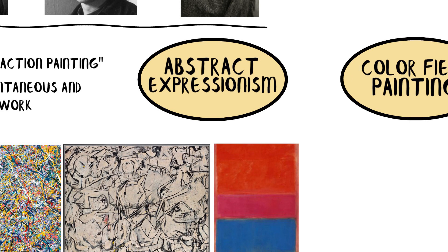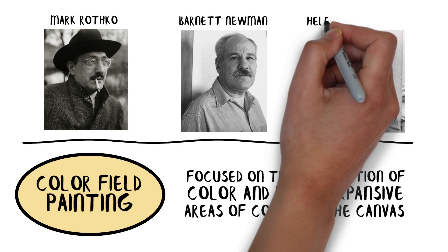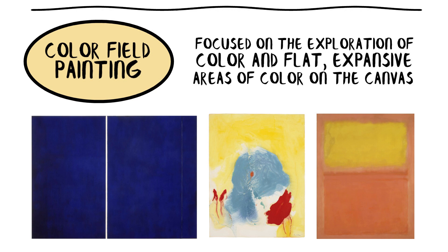Color Field Painting, on the other hand, focused on the exploration of color and flat, expansive areas of color on the canvas. Artists such as Mark Rothko, Barnett Newman, and Helen Frankenthaler were key figures in this movement. Their works featured large, unbroken fields of color, often devoid of recognizable subject matter, aiming to evoke emotional and spiritual responses through the power of color and form.